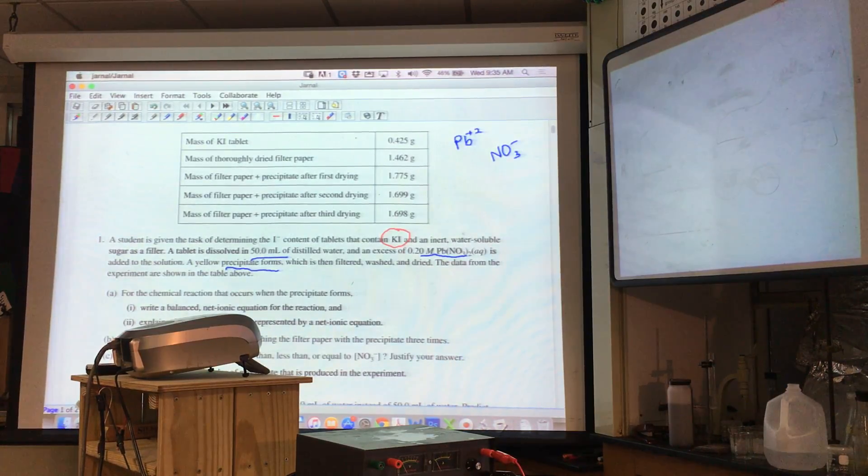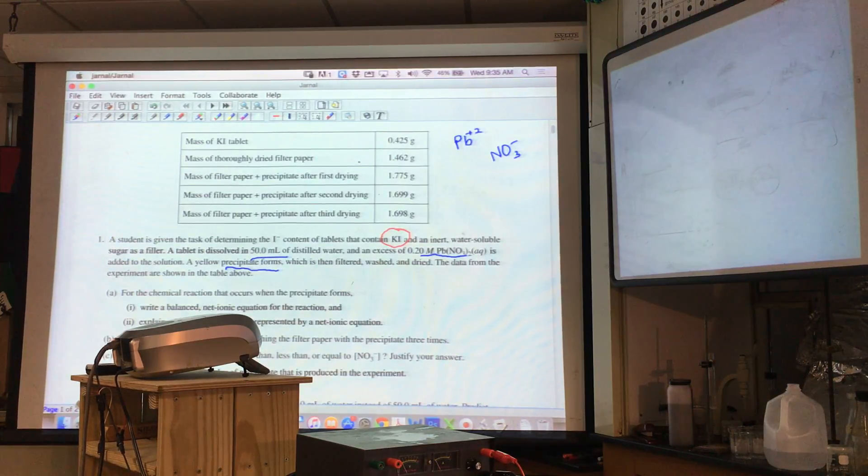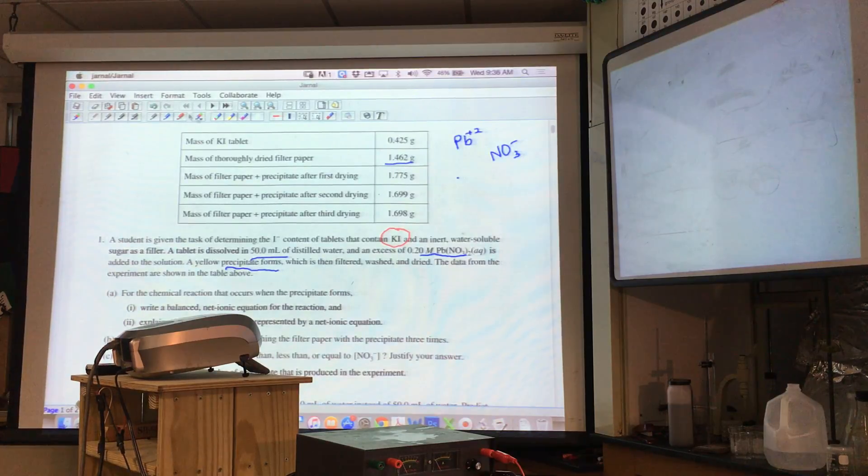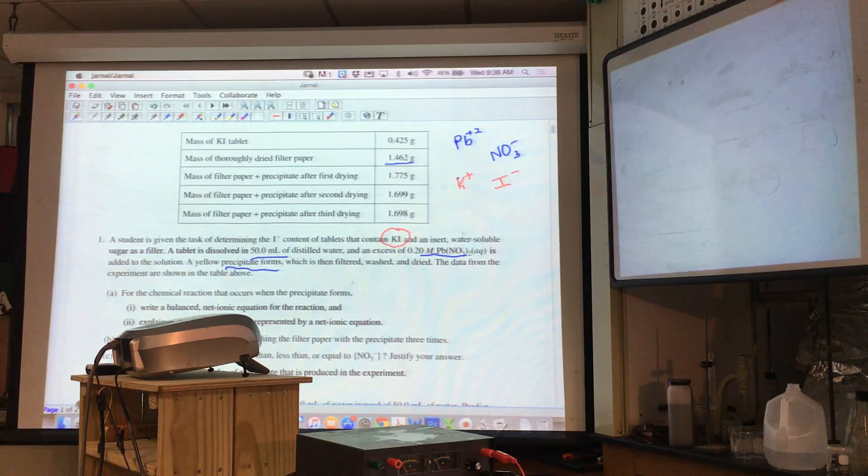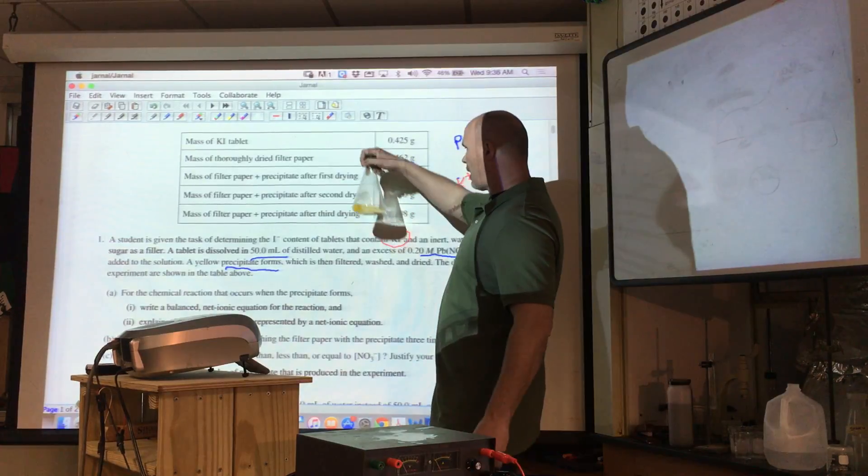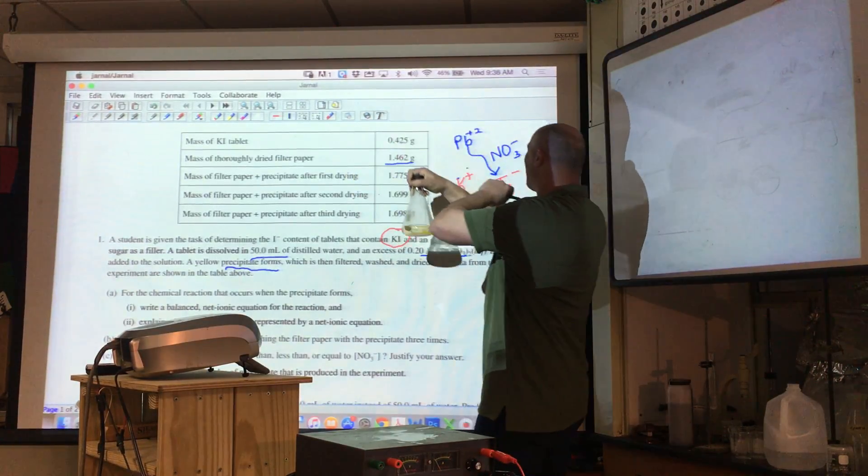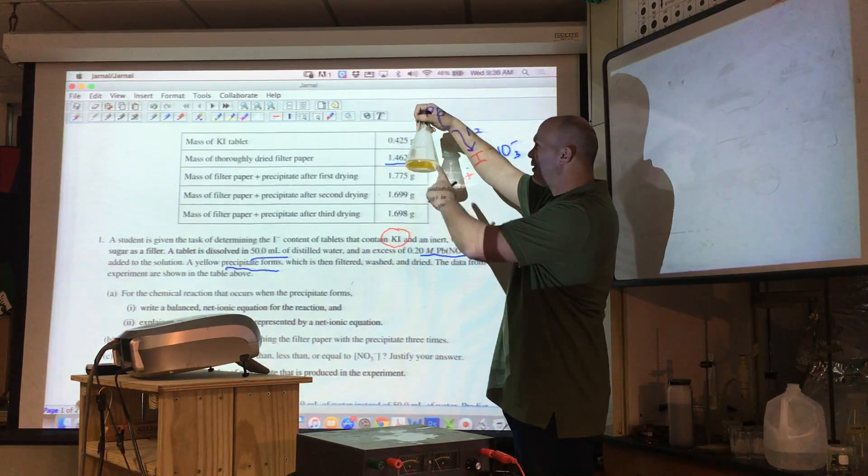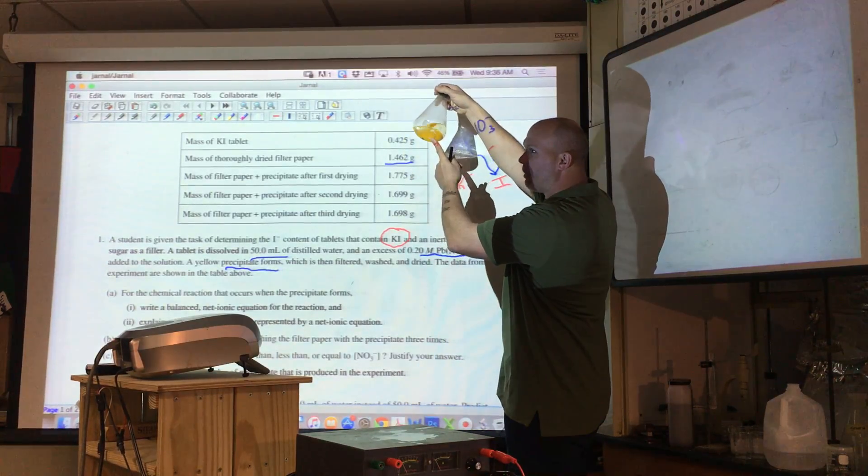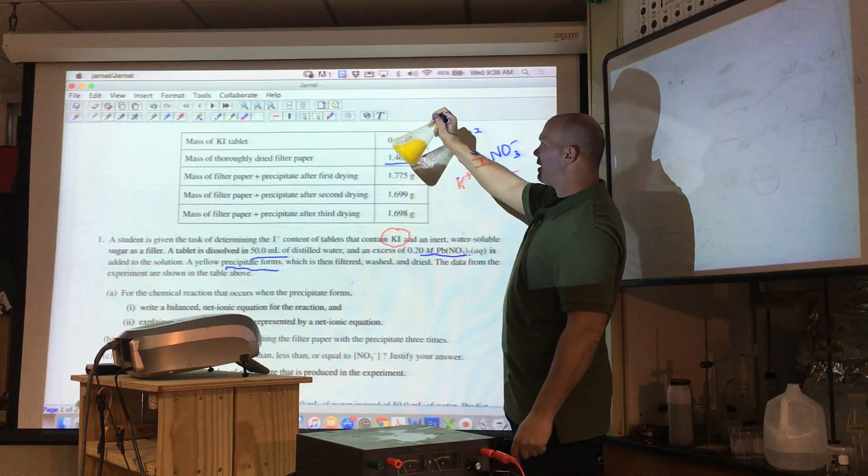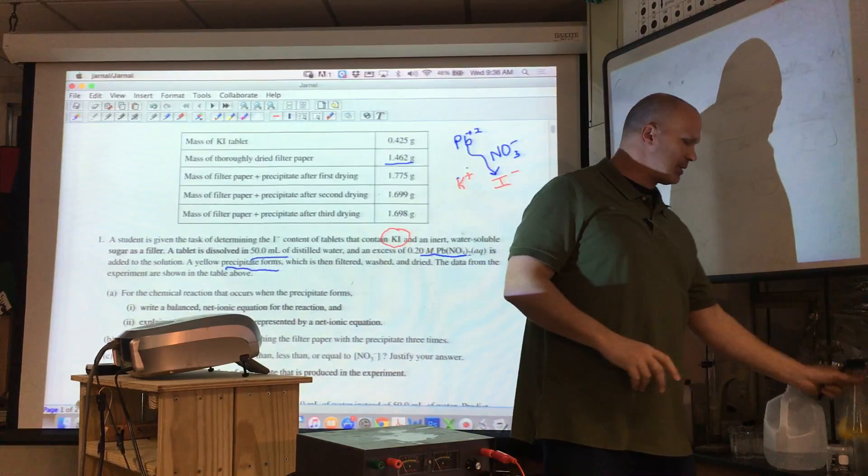The data from the experiment is shown below. We took the mass of the tablet, probably crushed it just like we did the Tums lab. Thoroughly dried filter paper before we used it. Now we added the lead nitrate to the KI. This is an example of precipitation analysis. The K-plus and the NO3 will not precipitate, they're soluble. But the lead plus two and the iodine will hook up, that's a demonstration I do every year. The clear liquid is potassium nitrate, and the solid yellow on the bottom is the lead iodide.